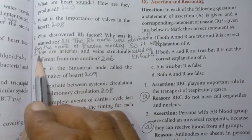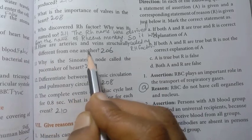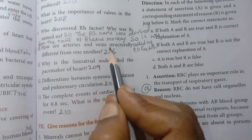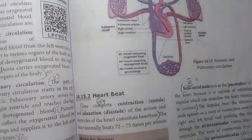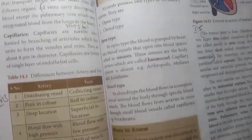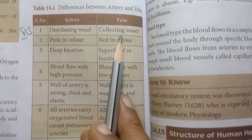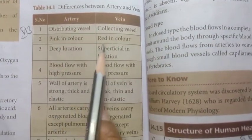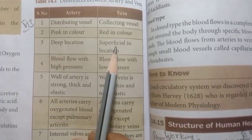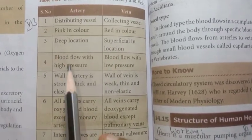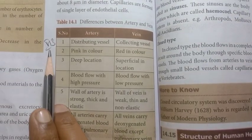Question 10: how are arteries and veins structurally different from one another? Page number 206. A tabular column is given. Write in tabular format. Artery vs vein: distributing vessel vs collecting vessel; pink in colour vs red in colour; deep in location vs superficial in location. Write maximum 5 points. That is the answer for Roman number 6, 10th question.